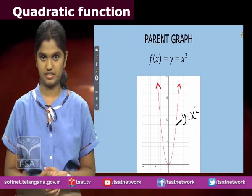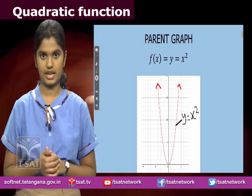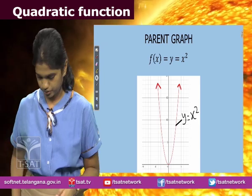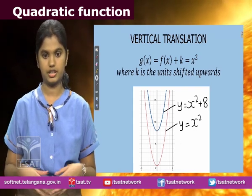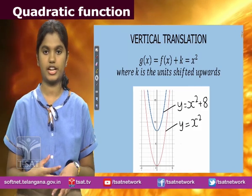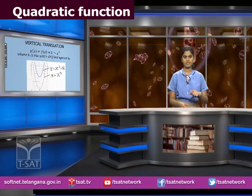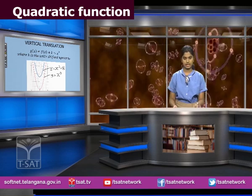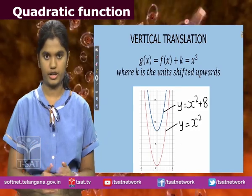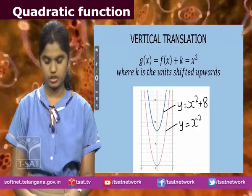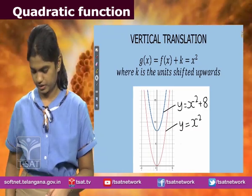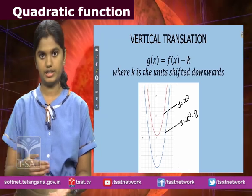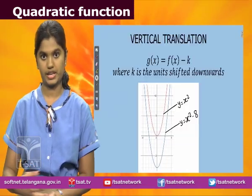Now I'll be talking about transformations of quadratic functions. The parent graph of any quadratic function is y = x². Different translations include vertical translation, horizontal translation, and stretching and compression. Vertical translation occurs when the graph is shifted upwards or downwards by a certain number of units k, meaning the y-value for each point is increased or decreased by k units. Here, the parent graph x² moves upwards by 8 units, giving y = x² + 8, and moving it downwards by 8 units gives y = x² − 8.